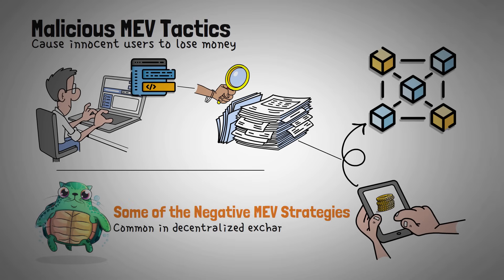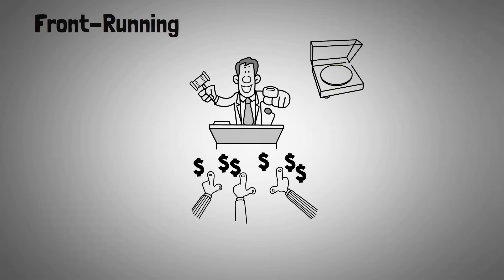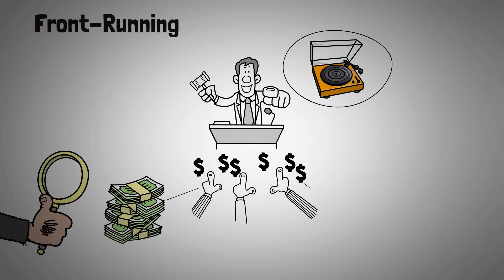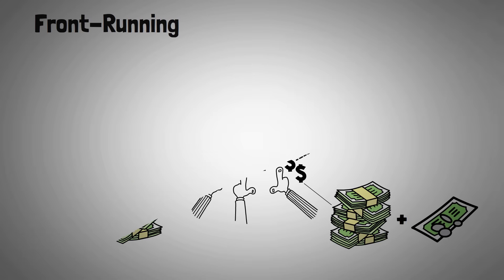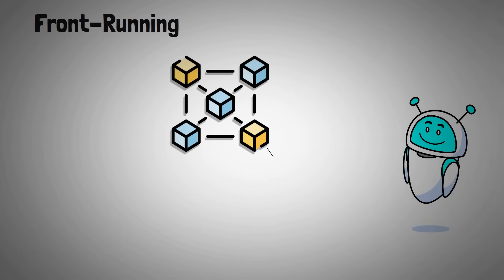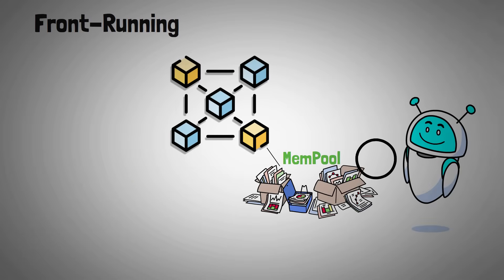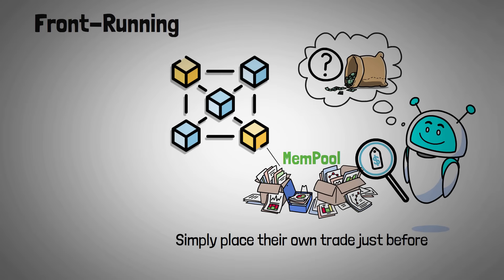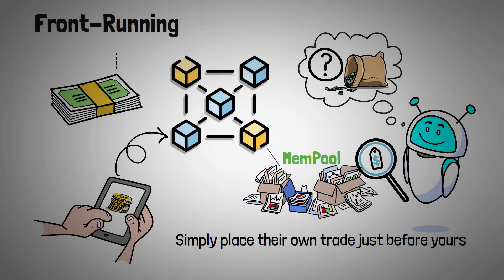These are especially common in decentralized exchanges because the transactions in the mempool are public. One of the most common MEV strategies is called front-running. Imagine you're at an auction trying to buy a rare collectible, but right before your bid is confirmed, someone at the auction peeks at your bid, offers just a little bit more, and then they win the auction. On the blockchain, bots scan the mempool for big trades or any profitable transaction, even if they don't completely understand how it's profitable — maybe it's a flash loan or a DEX arbitrage. They then simply place their own trade just before yours, stealing a small chunk of your profit.